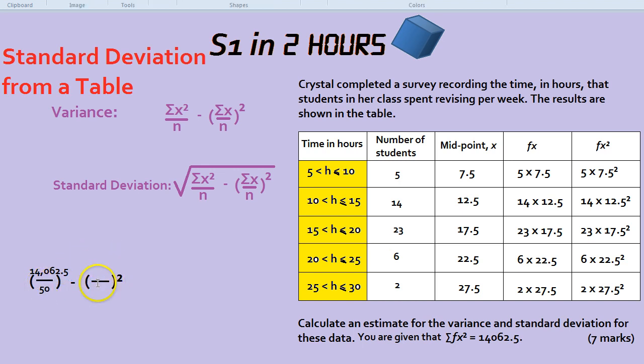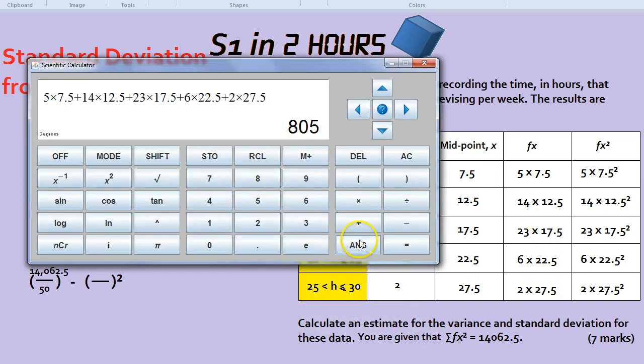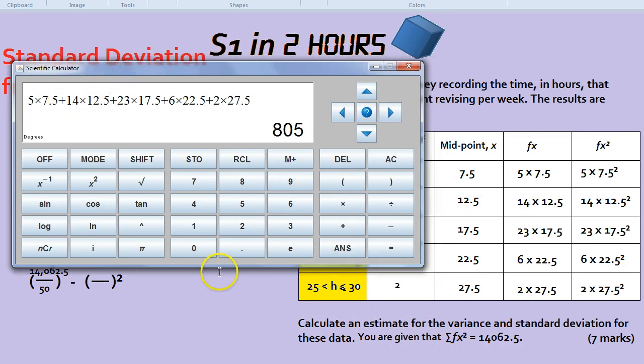Remember on the right, it's slightly different. It's the mean squared. Well, you might remember from a table to get the mean, you do midpoint times frequency. 12.5 times 14, 17.5 times 23, etc. That's how you find the mean from a table. Once you do that, we're going to add them all up. So we do that in our calculator. 5 times 7.5, and it gets to 805.